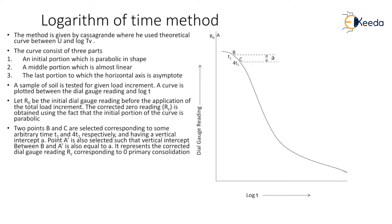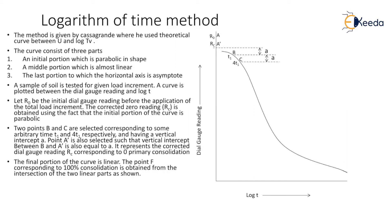The vertical intercept between B and C is A. Point A dash is also selected such that the vertical intercept between B and A dash is also equal to A. This point A dash represents the corrected dial gauge reading RC corresponding to zero primary consolidation. The consolidation between R0 and RC indicates initial consolidation, and after RC, primary consolidation starts.